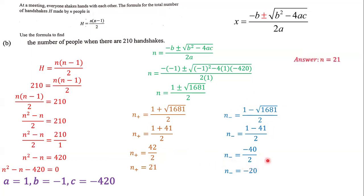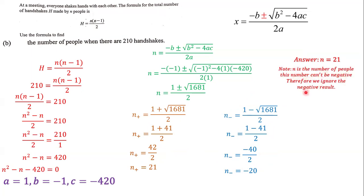Our answer is n = 21, because n represents the number of people and cannot be negative. We ignore the negative result and keep the positive result. Therefore, the answer to this question is n = 21.